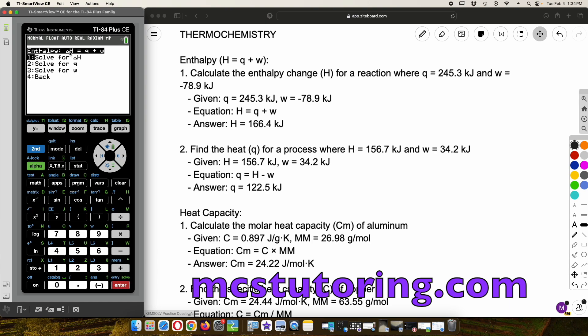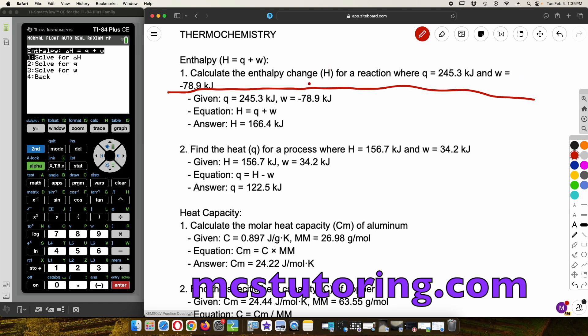And then what's cool here is it shows the basic enthalpy equation, the delta H equals Q plus W. And you can solve for any one of the variables, which is super awesome. And it's part and parcel of all the TI-84 calculator program solvers available at mcstutoring.com. So first thing, calculate the enthalpy change H for a reaction where Q equals 245.3 kilojoules and W equals negative 78.9 kilojoules. So what's going to be given is what's above this red line.